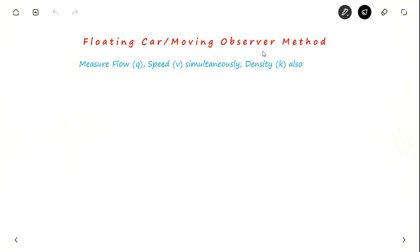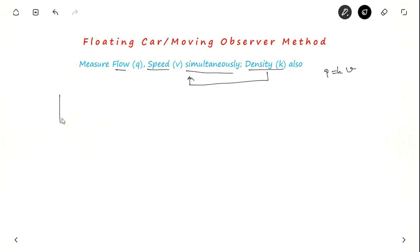The floating car or moving observer method is used not only for speed and delay, but also for measuring flow and speed simultaneously. Density can be derived using Q = KV. Now, consider two cases. In Case 1, the observer is stationary and the traffic stream moves. If N₀ vehicles cross the observer in time t, then flow Q = N₀ / t. For example, if 10 vehicles pass in 10 seconds, flow is 1 vehicle per second.